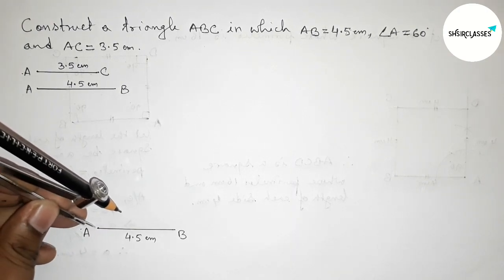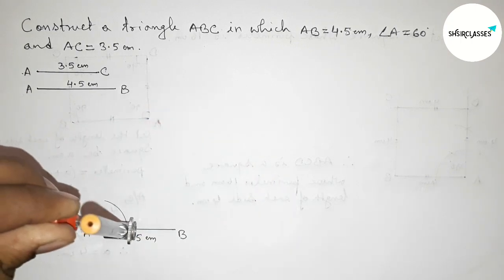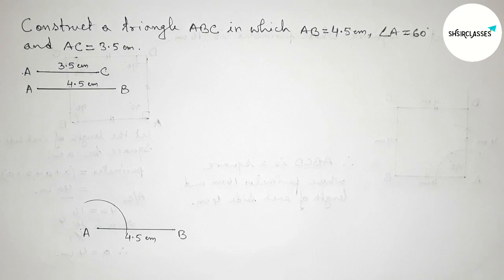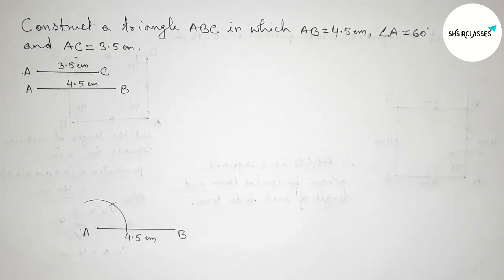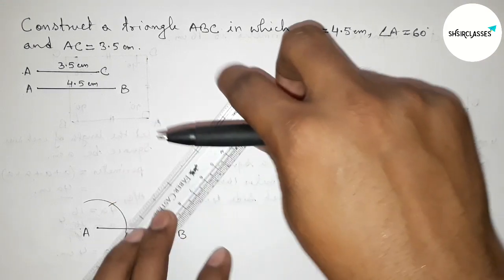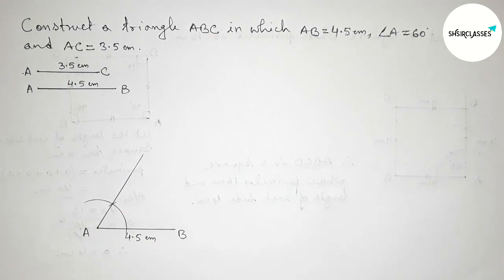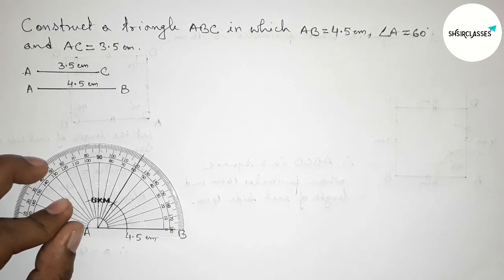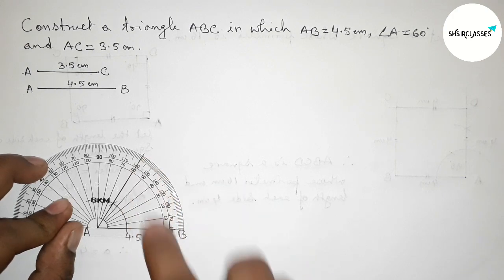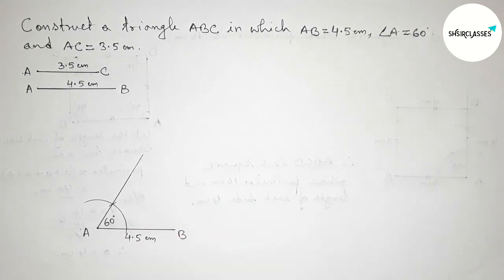Next, drawing a 60 degree angle at point A. Putting the compass on point A, taking any length and drawing an arc. Again putting the compass and taking the same length, cutting the arc here. Joining this side to get a 60 degree angle. Checking with the protractor — this is perfectly a 60 degree angle, so angle A equals 60 degrees.